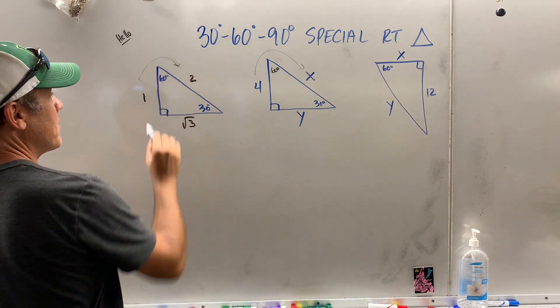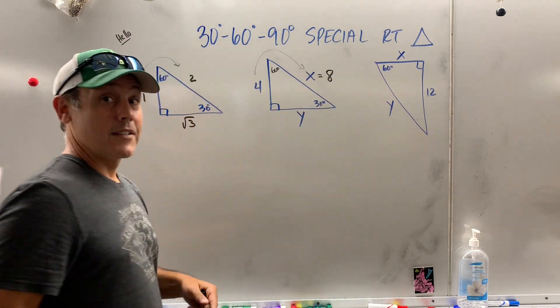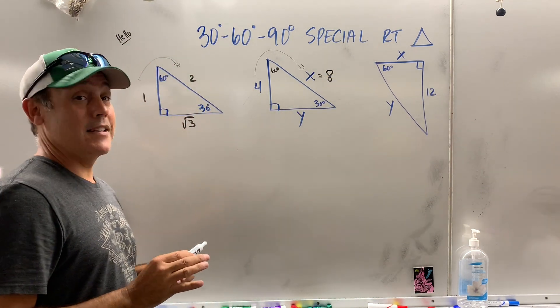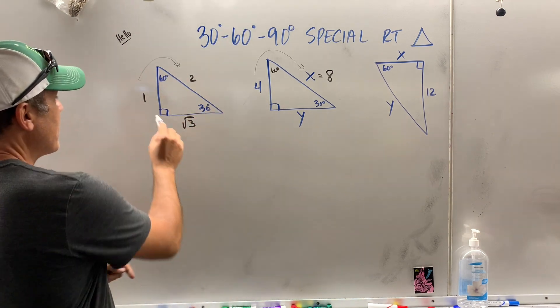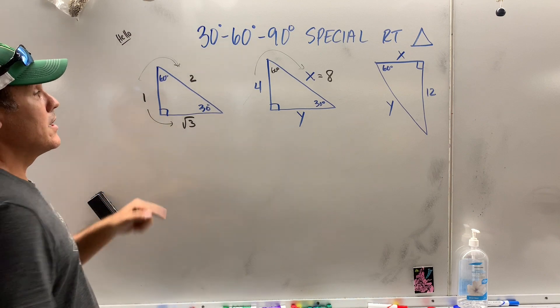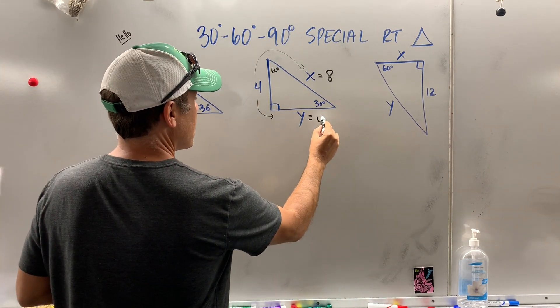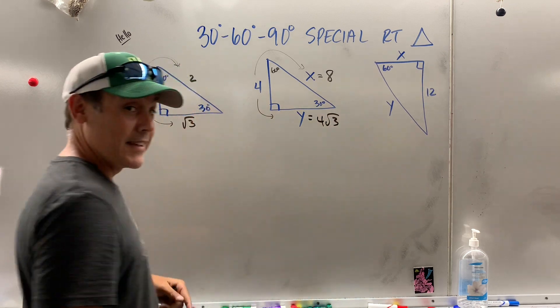Don't make this more complicated than it needs to be. How do I go from here to here? Multiply by radical 3. So, how do I go from here to here? Multiply this by radical 3. So, y is equal to 4 radical 3. That's it.